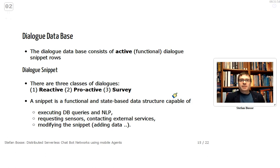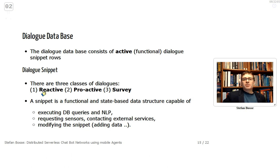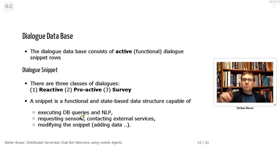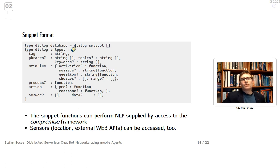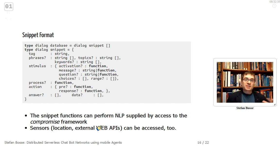The dialogue database is the important part of the chatbot agent — it's owned by the agent and consists of active functional dialogue snippet rows. Snippets can address different classes of dialogues: reactive, proactive, and survey. Each snippet is a functional, state-based data structure capable of executing database queries, natural language processing, requesting sensors, contacting external services, and modifying the database. Snippet functions access NLP via the Compromise framework, sensors, location, and external web APIs.